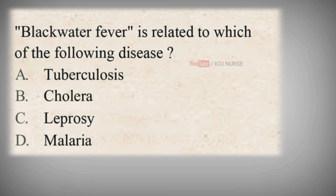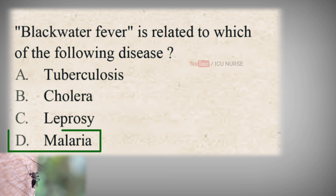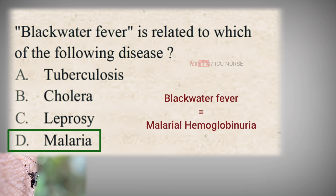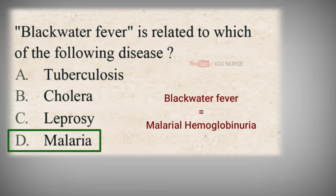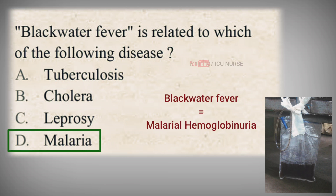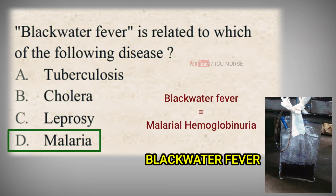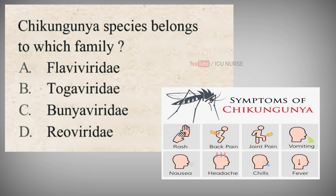Blackwater fever is related to which of the following disease? A. Tuberculosis, B. Cholera, C. Leprosy, D. Malaria. The correct answer is D. Malaria. Blackwater fever is also called Malarial Hemoglobinuria. It is one of the less common yet most dangerous complications of malaria, occurring almost exclusively with infection from the parasite Plasmodium falciparum. Due to the black or dark red color of the urine, this condition is called Blackwater fever.